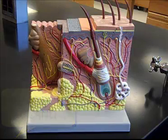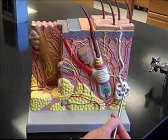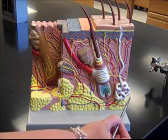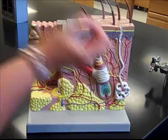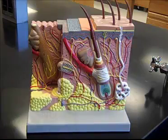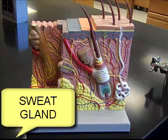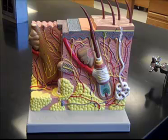We have another type of gland in the skin. It's this coiled structure — nice and white — and we see a duct or tube leading all the way up to the surface of the skin. That's a sweat gland. Sweat glands secrete sweat in order to dissipate heat as well as get rid of minor trace amounts of metabolic waste.